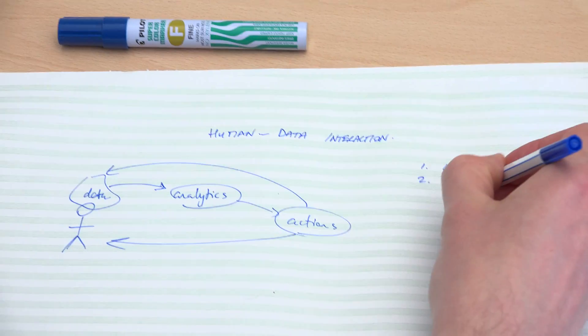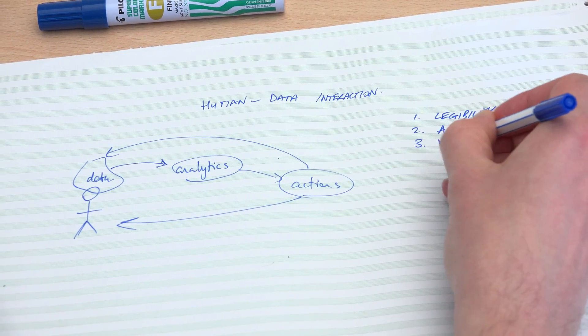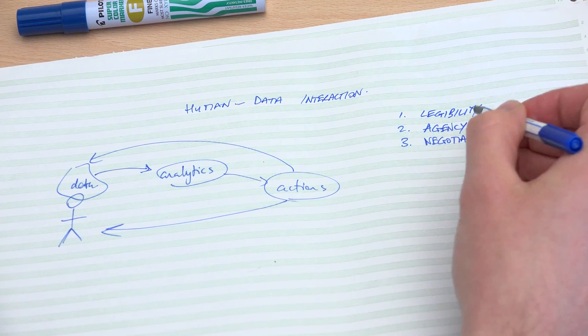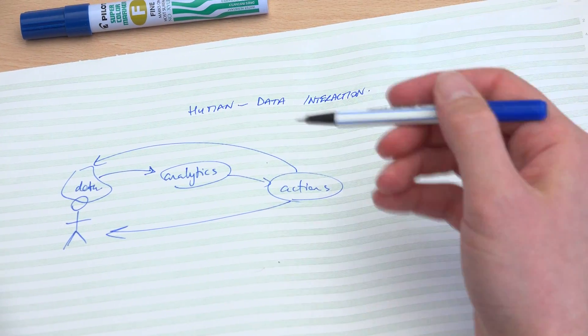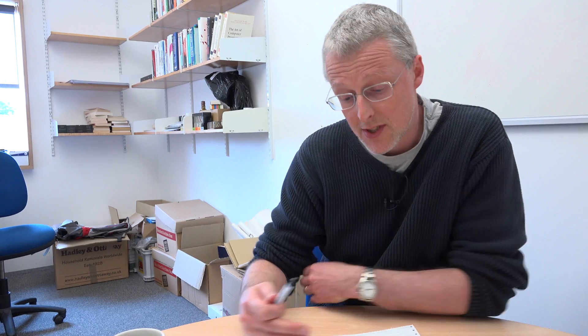The way this is evolving is missing various features that are necessary. There were three in particular we defined: legibility, agency, and what we call negotiability. Legibility is the ability to see and understand what's going on. The observation is that for a lot of people it's very difficult to understand all the different sources of data being collected about you, and difficult to see what that data means and the implications of somebody having collected it.